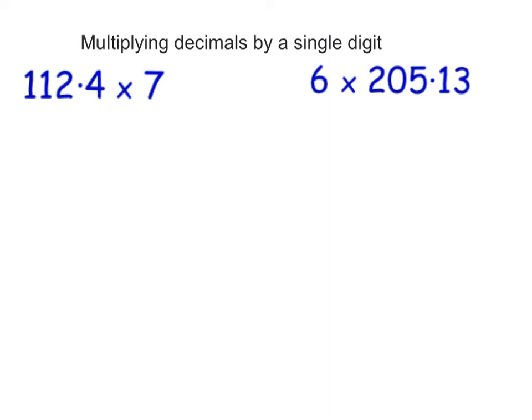Multiplying decimals by a single digit just means a number between 1 and 9. Let's look at this first question: 112.4 multiplied by 7. All we're going to do is multiply normally first and forget about the decimal point.